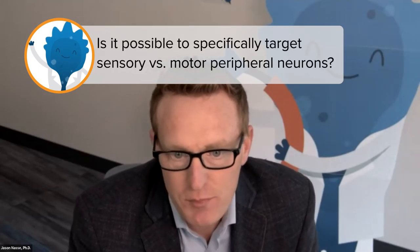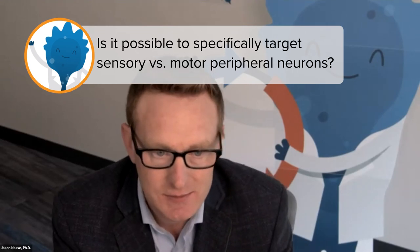Is it possible to target sensory versus motor peripheral neurons? In general, we would recommend using the more CNS-focused capsids for transducing the motor neurons, and the more PNS-focused capsids for transducing the sensory neurons. With that combination, you can transduce both or just one of them. Looking at the final graph from the presentation that shows which species and which CNS or PNS vectors you can choose — you can choose the CNS one for the motor neurons and the PNS one for the sensory neurons.